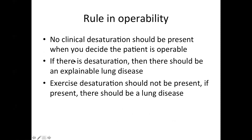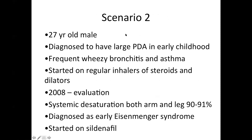Decision on operability sometimes will not be very easy on calculations alone. Temporary shunt occlusion sometimes may give a clue. The rule in operability in general: no clinical desaturation should be present when you decide to operate. However, if there is desaturation, there should be an explainable lung disease. I will give another scenario for a PDA: a 27-year-old male diagnosed with a large PDA in early childhood has very frequent bronchitis, is permanently on regular inhalers of steroids and bronchodilators, and was evaluated with systemic desaturation of 90-91% in both upper and lower limbs — uniform hypoxia with no differential cyanosis.